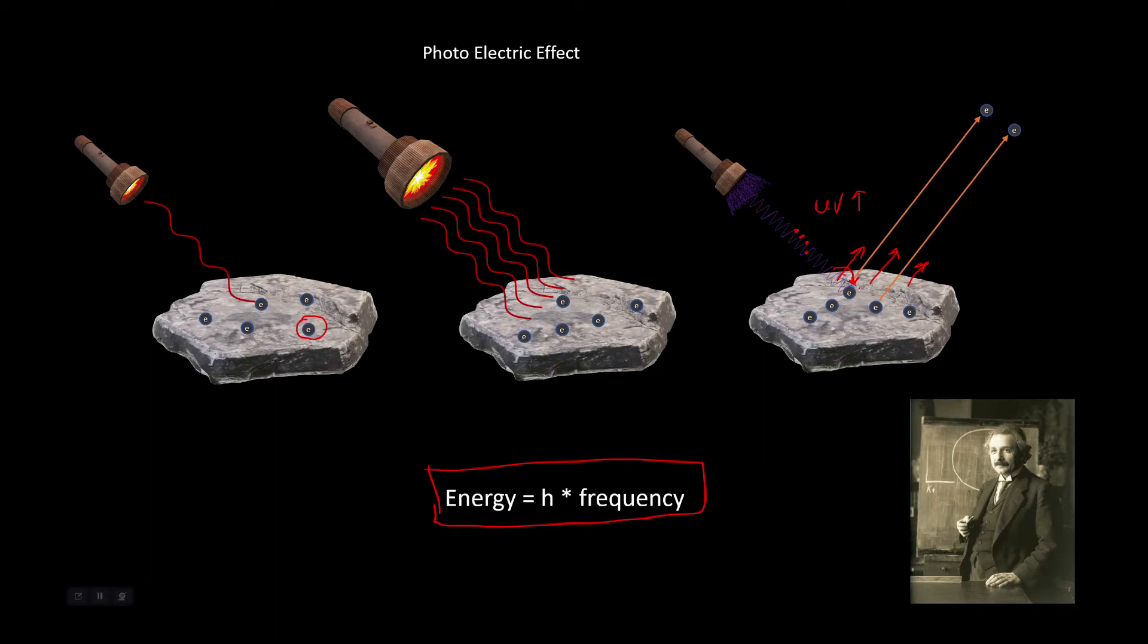Each photon packet will transfer its energy onto the electron, and if it is sufficient, the electron gets excited and gets ejected. What does it mean? It looks like light is following the corpuscular theory, and essentially the debate of whether light is a wave or particle took yet another turn.